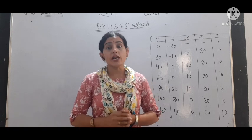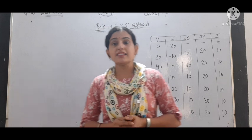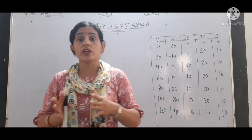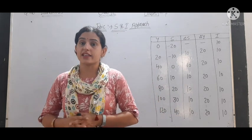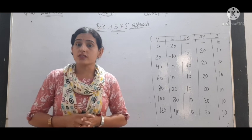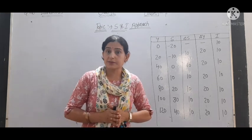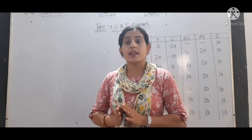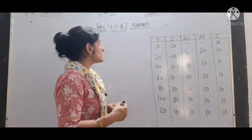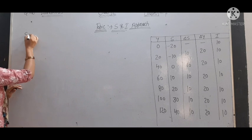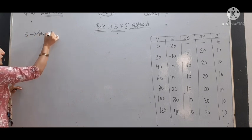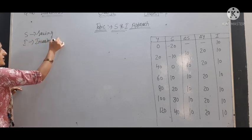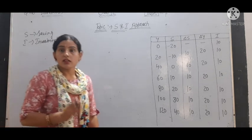Good morning students. Today we will start the topic S and I approach. In the previous video we talked about the short-term equilibrium output using aggregate demand and aggregate supply approach, where we discussed the table of aggregate demand, aggregate supply, and the diagram. Now we will talk about the S and I — saving and investment — approach.